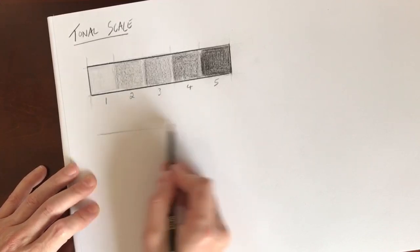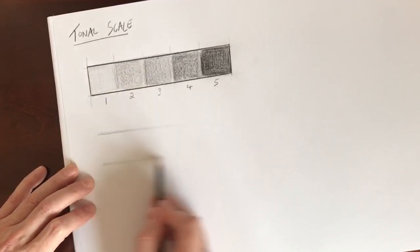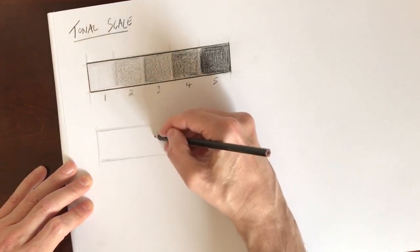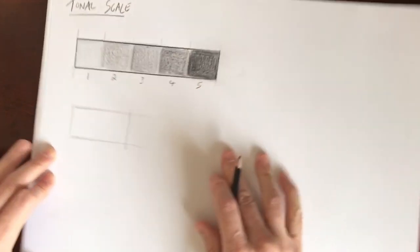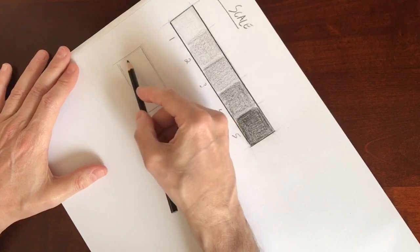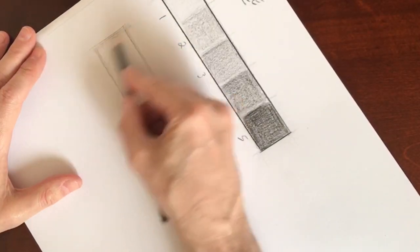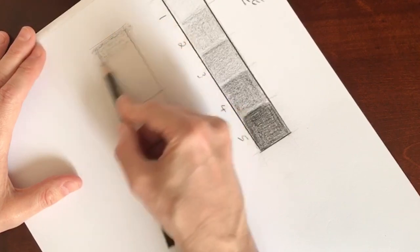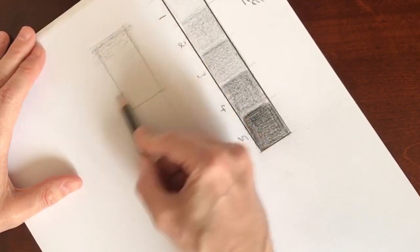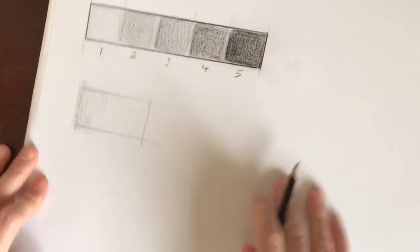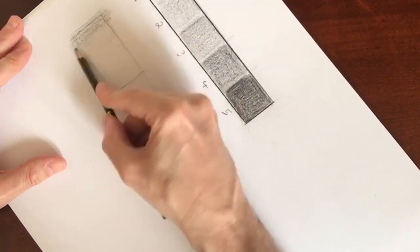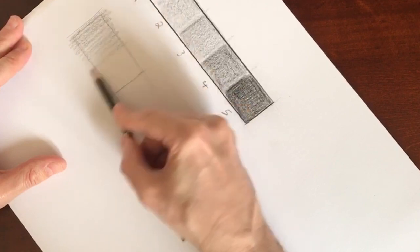The second type of tonal scale is called a gradient tonal scale. This is basically what you would use if you've got curved surfaces. Flat tonal scale is for flat surfaces on an object. What if we've got curved surfaces where light basically reflects off the surface going from a gradual change from dark to light.